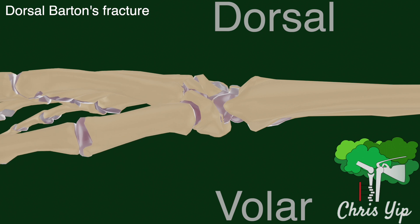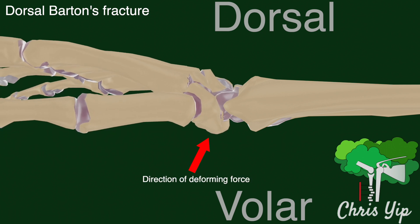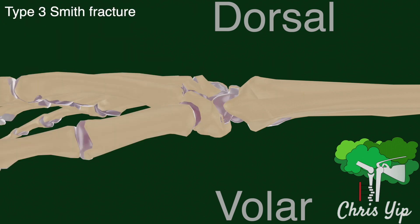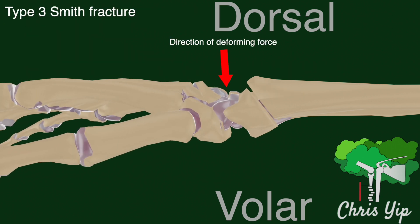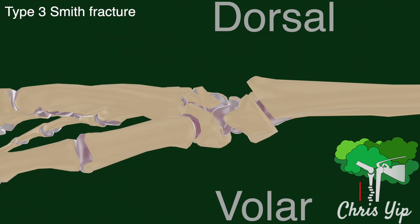In contrast, a dorsal Barton's fracture will result in a dorsal and proximal displacement of the carpus and distal fragment. A type 3 Smith fracture is an extra-articular fracture with a volar displacement of the distal fragment and carpus.